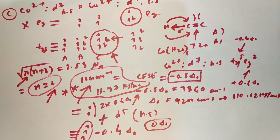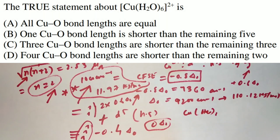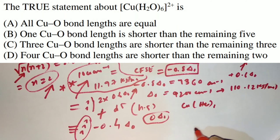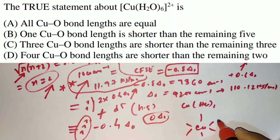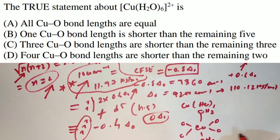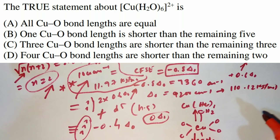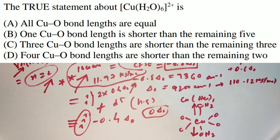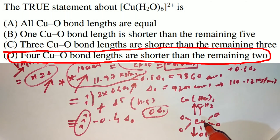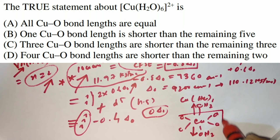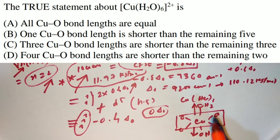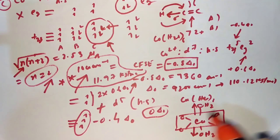The next question is about Jahn-Teller distortion in Cu(H2O)6. The six Cu-O bonds are not equal: four equatorial Cu-O bonds are shorter, while the two axial Cu-O bonds are longer due to Jahn-Teller elongation. The final answer is that four Cu-O bond lengths are shorter than the remaining two axial ones.